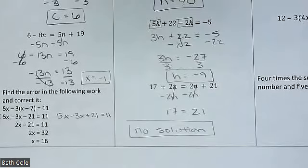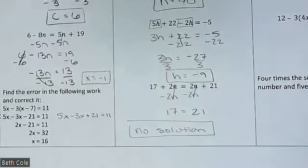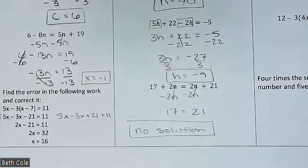What would it be if you got something that did make sense, like 5 equals 5? Infinite solutions.